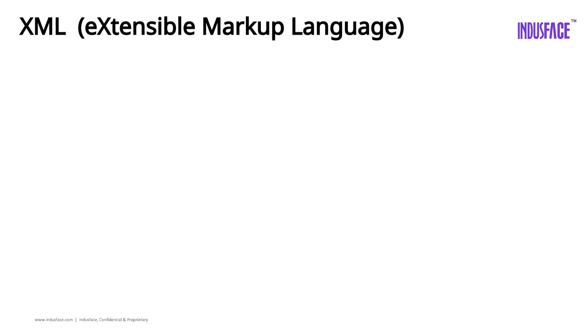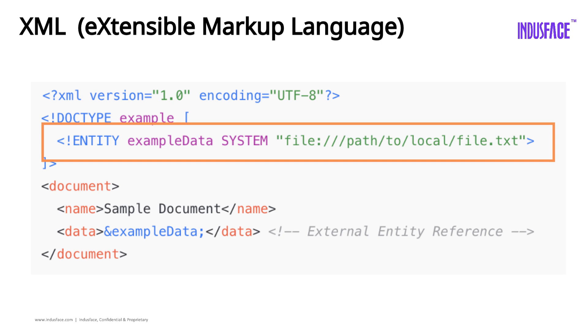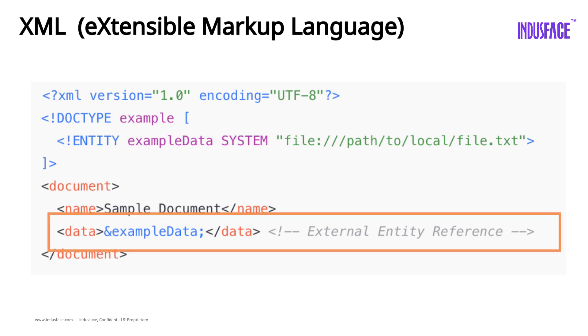Many applications process XML data, like receiving configuration files or user inputs. XML itself supports something called external entities, which are shortcuts to load external resources. But if the application isn't properly secured, attackers can send specially crafted XML that tricks the system into loading sensitive files or executing commands.